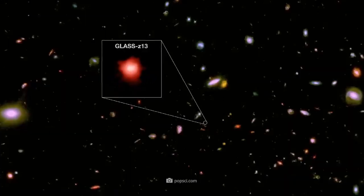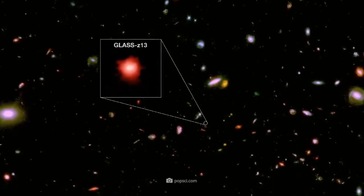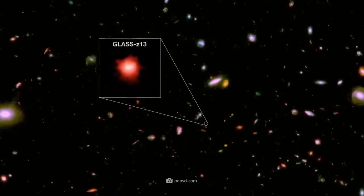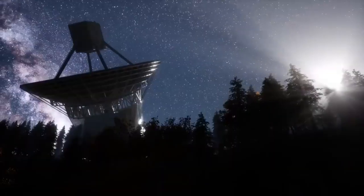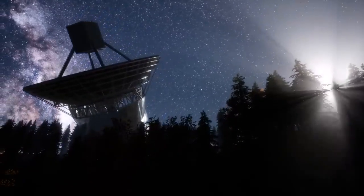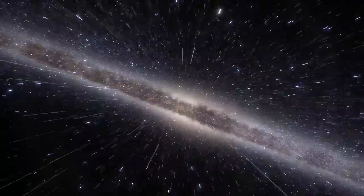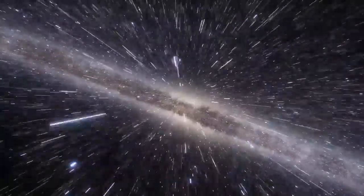At the top of the list of the probably oldest galaxies are currently the galaxy Glass Z13 with an age of 13.5 billion years and the galaxy Sears 93316 which could be even a tad older. Remember, the Big Bang should be about 13.7 billion years ago and after the Big Bang there was supposedly nothing for a very long time. But Webb's pictures show something else.